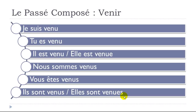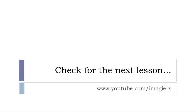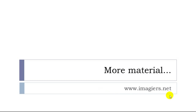Let's repeat one more time: je suis venu, tu es venu, il est venu, elle est venue, nous sommes venus, vous êtes venus, ils sont venus, elles sont venues. The website imagier.net is waiting for you.